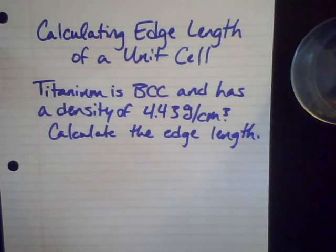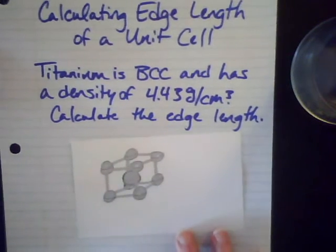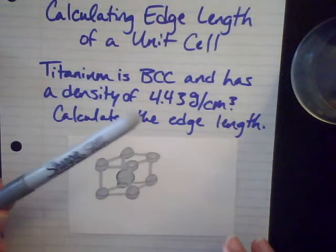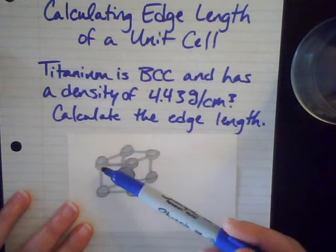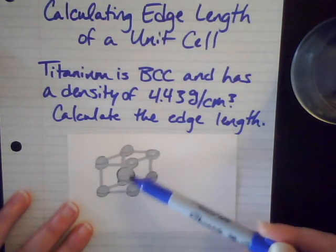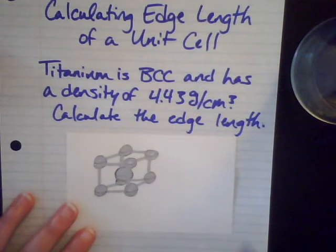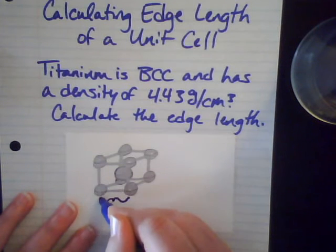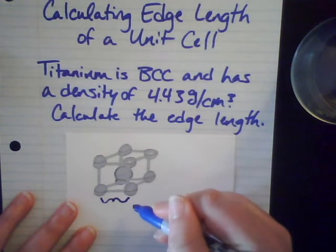So for visualizing a body centered cubic unit cell, it looks like this. I even drew it with my fancy silver sharpie so that it looks like titanium. So we have atoms on each of the corners like this, and then we have one at the body center. This is our titanium unit cell, and what we're trying to solve for is the length of one edge.